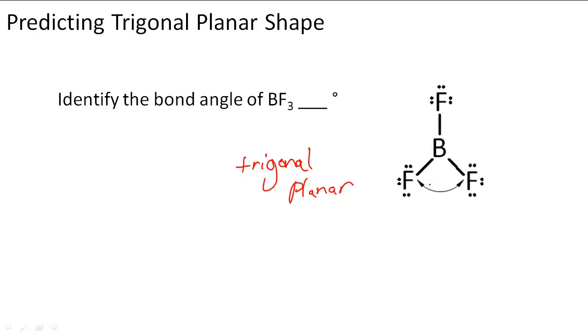So the angle for trigonal planar is 120 degrees. So right here there's 120 degrees separation between all of these F's because they want to be as far apart from each other as possible.